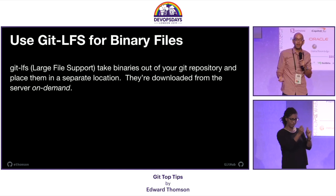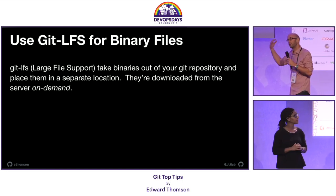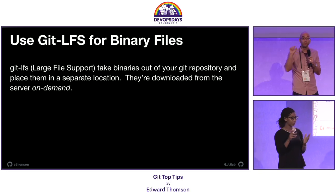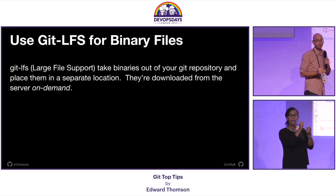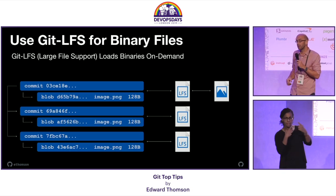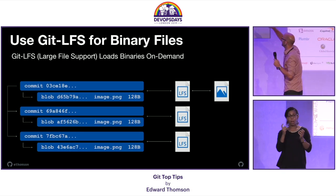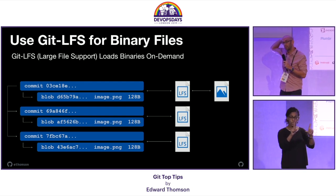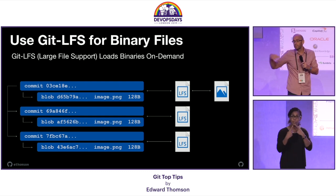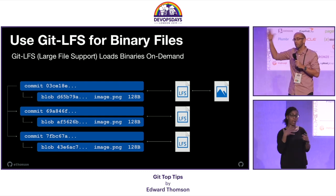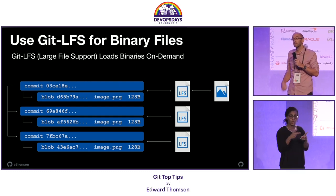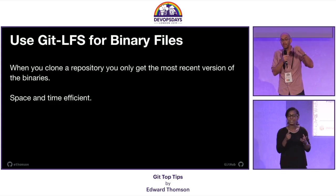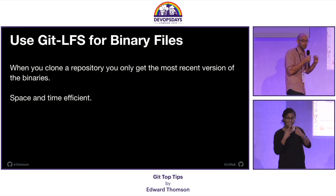Git LFS changes that. Instead of when you run git add and git commit putting the actual binary into the repository, it puts a little pointer file that has metadata about the image and where to get it. That way, when you run git clone, you only get the most recent version of the image. You get all the metadata and historical information about the image, but when you go to check out the latest version, it only puts the most recent version on disk. So when you run git clone it's very efficient — you only get the metadata and the images you need for the latest revision.